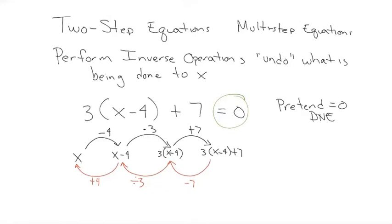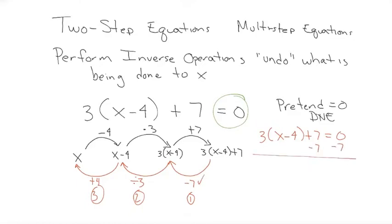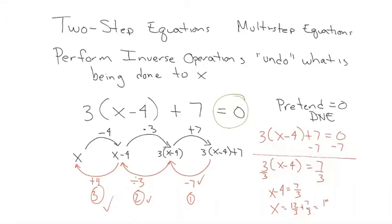I'm going to actually solve the equation doing these three steps in order. Three times (x minus four) plus seven equals zero. First, I subtract seven from both sides. Next, I divide both sides by three. Last, I add four. With the exception of some fraction details, all I did was perform inverse operations to undo things.